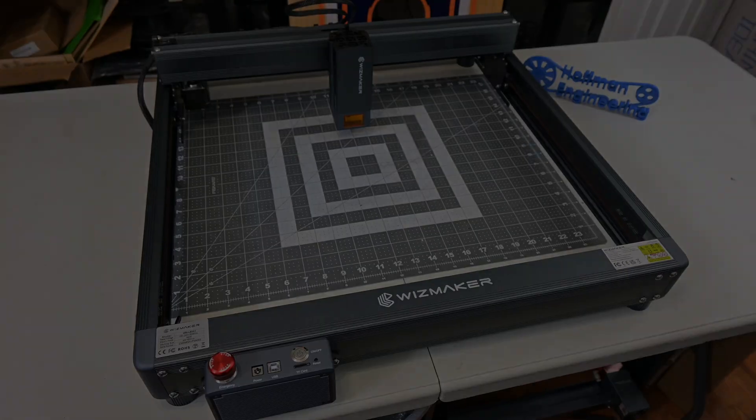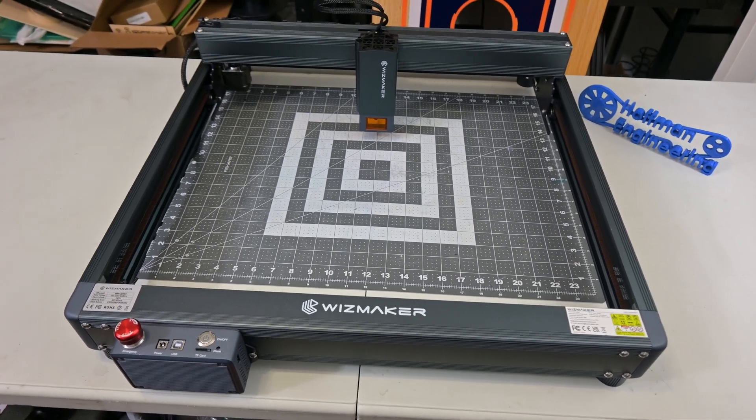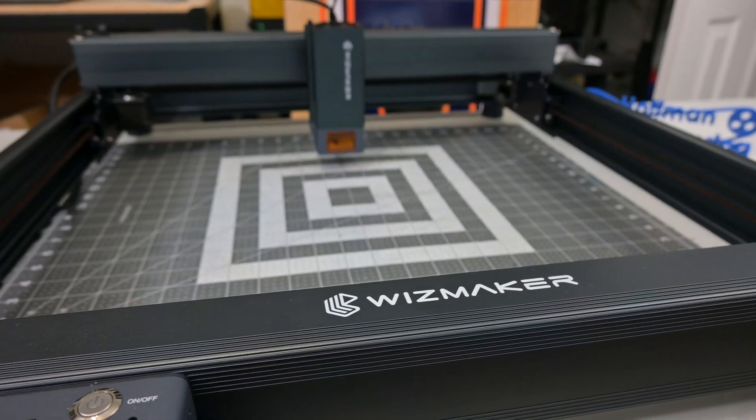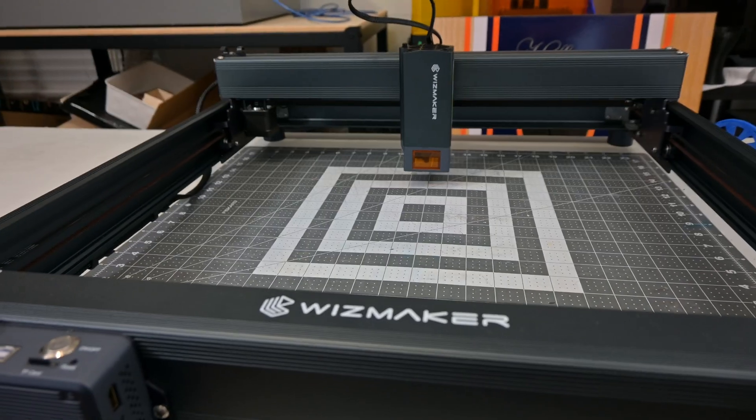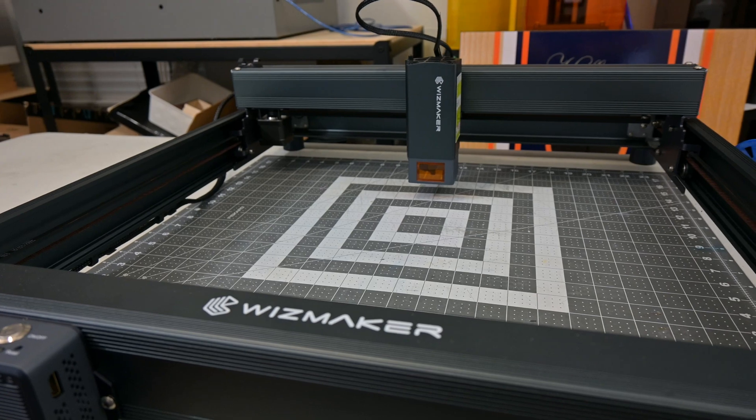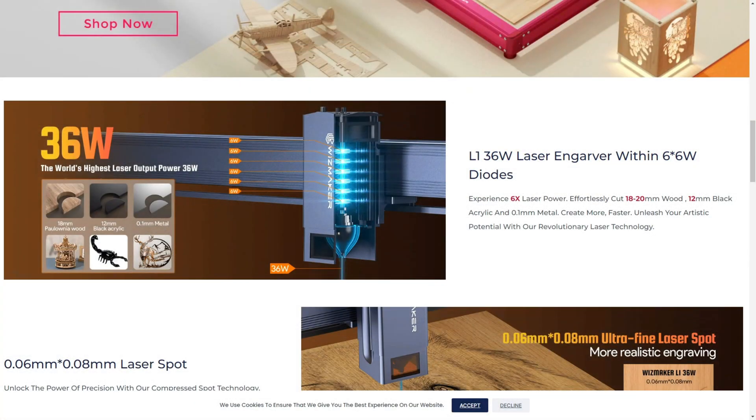Let's get into it. The WizMaker L1 is a benchtop diode laser engraver with a work area of 400mm by 400mm. The laser module comes in three different varieties: a 12 watt version, a 24 watt version, and a 36 watt version. I have the 36 watt version with me today. Inside the laser module are six 6 watt blue diode lasers that are combined together to form the 36 watt output.